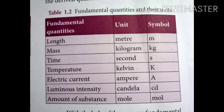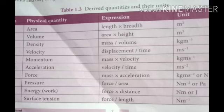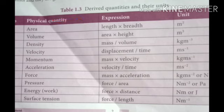The tabular column shows the physical quantity and how to express it along with its unit. For example, area is expressed in the form of length into breadth. The unit of length is meter and breadth is also meter, so the unit of area is meter squared (m²). Next, force is defined as mass into acceleration.